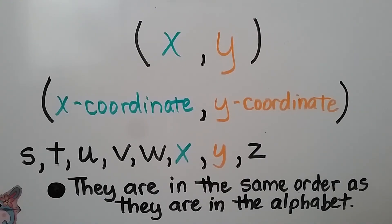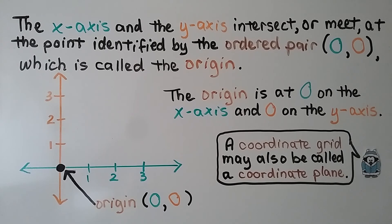So remember the x is first and the y is second in an ordered pair, and they're in the same order as they are in the alphabet. And remember the x and y-axis intersect at the origin, zero, zero.